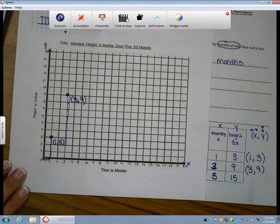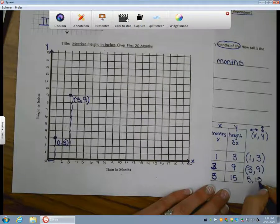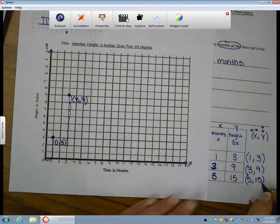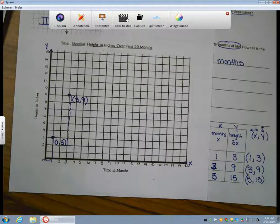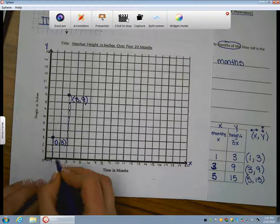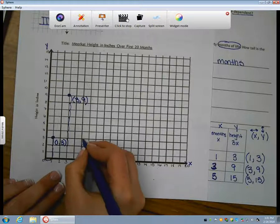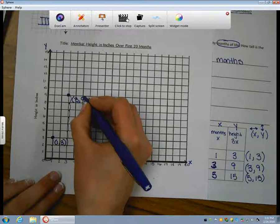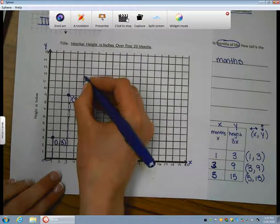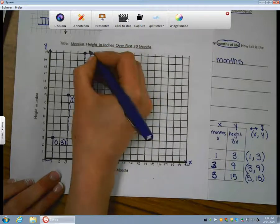Our last ordered pair is 5 comma 15. If you'd like to pause the video, you can plot that one on your own. And then I'm going to move over 5: 1, 2, 3, 4, 5. And then up 15. And, of course, label your ordered pair.